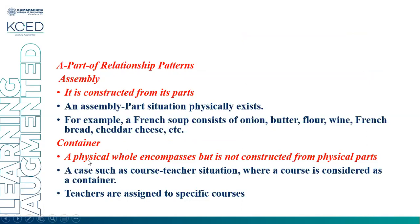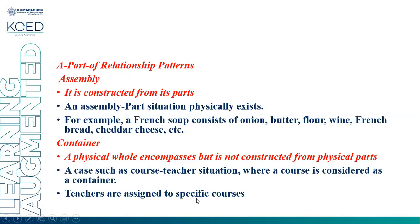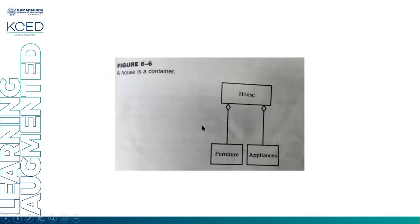The second pattern is container: a physical whole encompasses but is not constructed from the physical part — it is a container only. The whole contains parts but the whole is not made up of parts. For example, a course-teacher situation where a course is considered a container; a teacher is assigned to a specific course, but the course is not constructed by using teachers. Similarly, a house contains furniture and appliances as parts, but the house is not constructed using furniture and appliances.